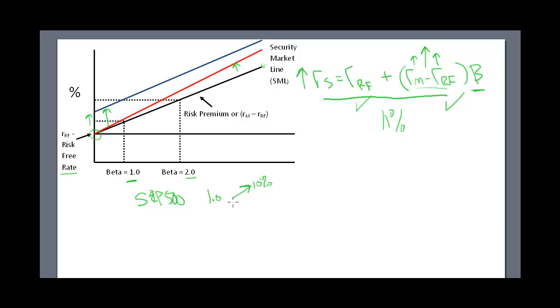Now a beta of two would say if the S&P increased by 10%, my stock has increased by 20%, twice as much. You can see it's more risky because the downside is also there. At a beta of two, if the stock market goes down by 10%, I decline by 20%. So as betas get greater than one, it's more risky than the S&P 500.